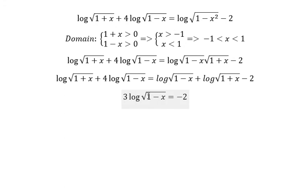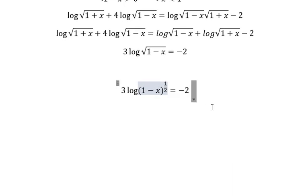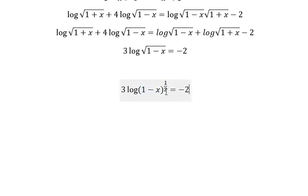So in this one, we have the square root. We can change into 1 minus x to the power of 1 over 2. So we put 1 over 2 outside the log, and we will get 3 over 2.